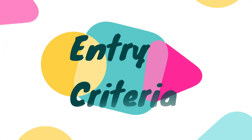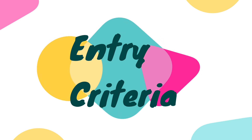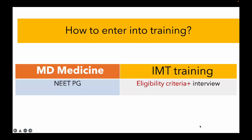Let's talk about the differences in entry criteria. For MD medicine, you have to get a good rank in NEET PG. Once that is done, based on your rank you can choose your subject or hospital. You also have to consider government bonds, reservations, etc., but the entry process is pretty straightforward.